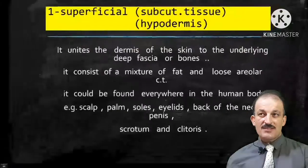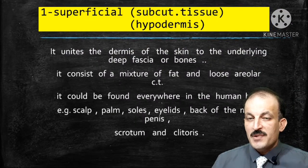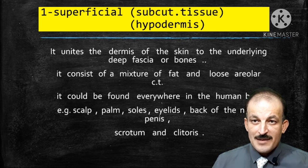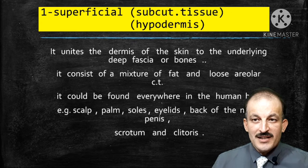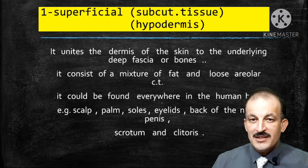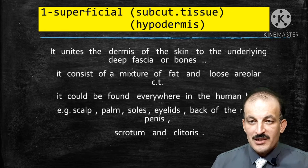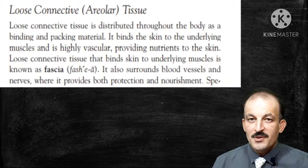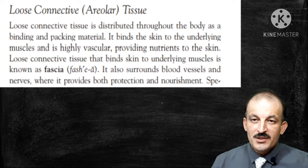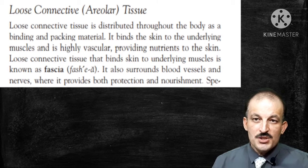Two types of fascia are present in the human body. The first type is superficial fascia, also called subcutaneous tissue or hypodermis. It unites the dermis of the skin to the underlying fascia or bones. It consists of a mixture of fat and loose areolar connective tissue, which is distributed throughout the body as a binding and packaging material.